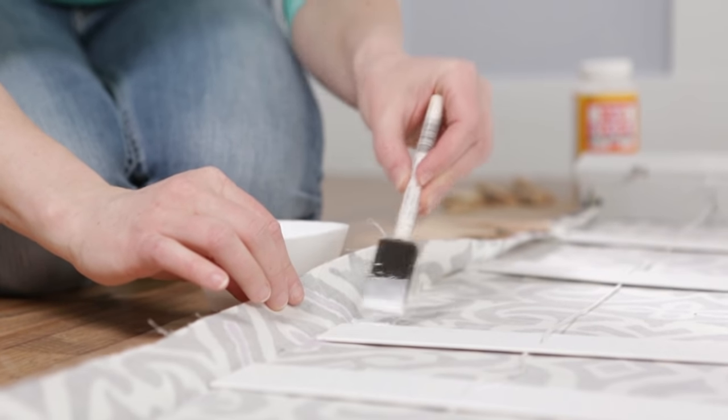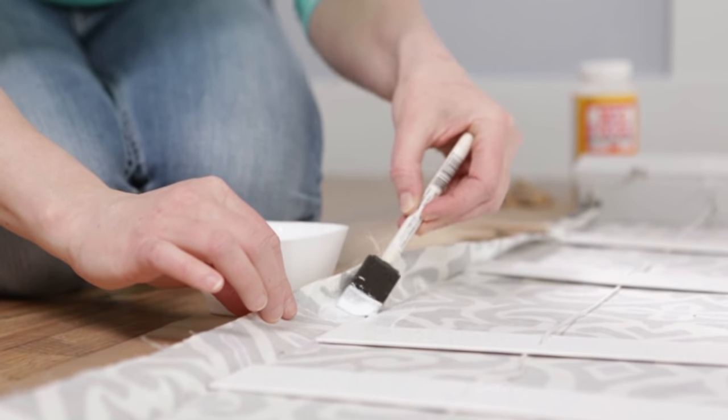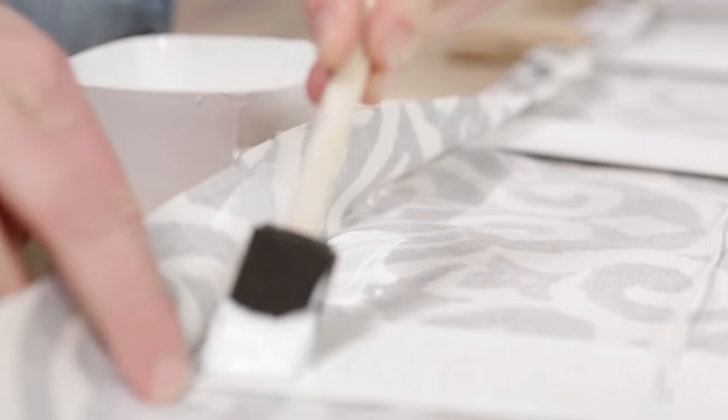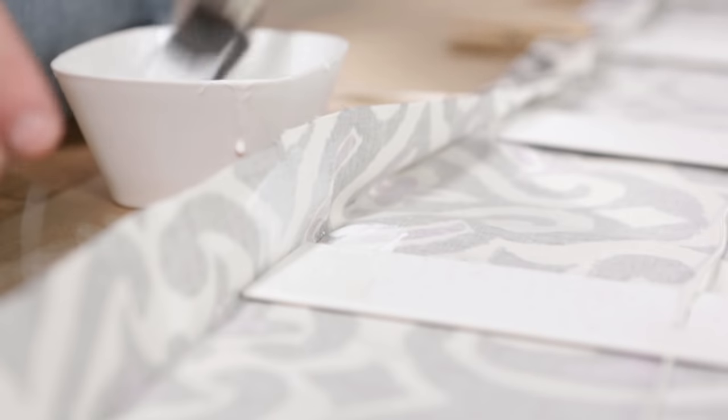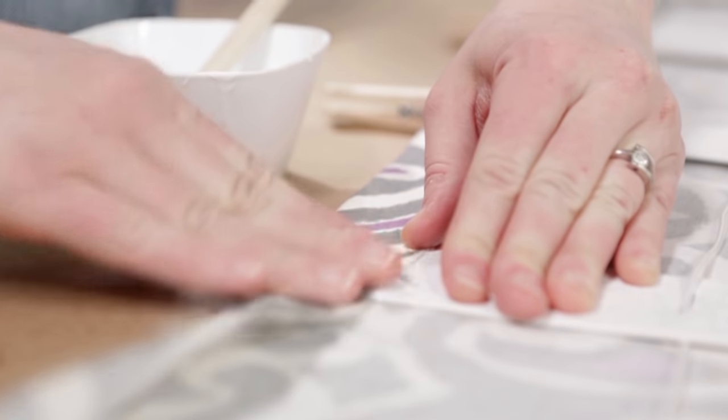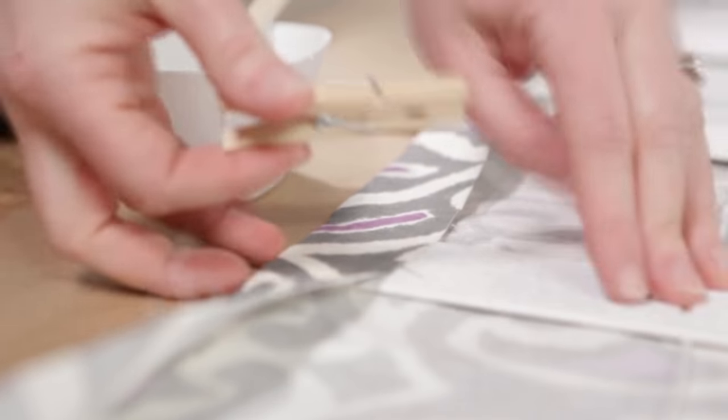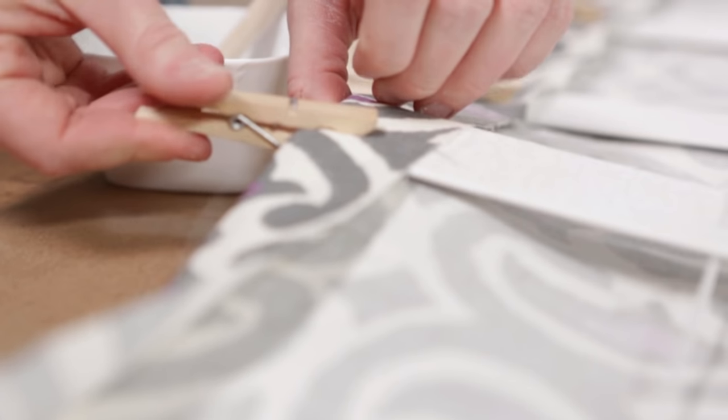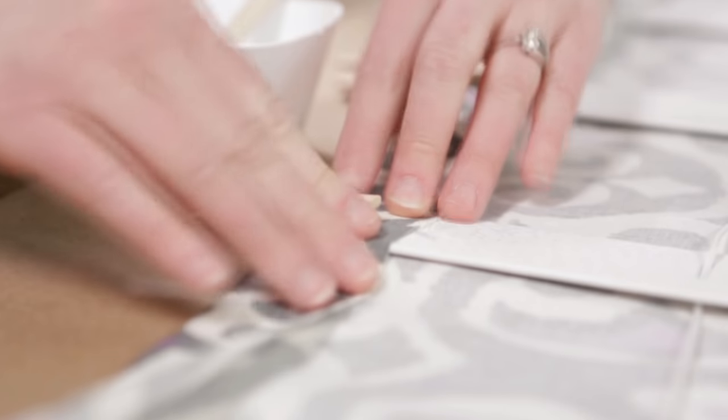Glue the fabric around onto the back side of the slats where you marked the slat placement before. You just need to glue the edges on the front and back, not the whole slat. Place clothespins on the edges of the slats to ensure those areas adhere nicely.